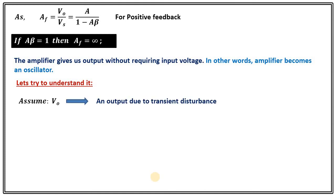Let's understand it. Suppose there is an output signal due to transient disturbance. From where this transient disturbance will come? Once we will switch on the amplifier or the oscillator there will be a transient disturbance. There is always a transient disturbance. Let's say V0 is the output voltage due to that transient disturbance. As there is output voltage then there must be a feedback voltage and that feedback will be beta V0.